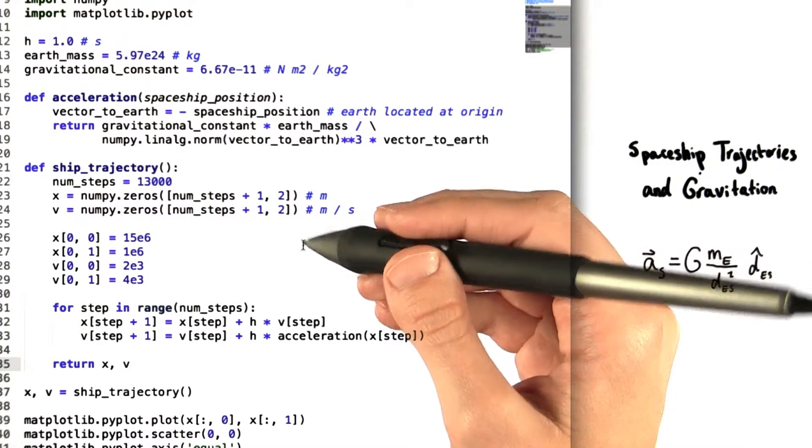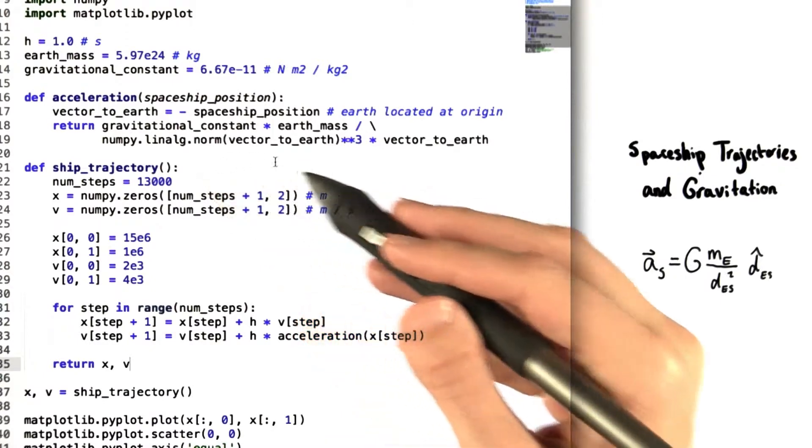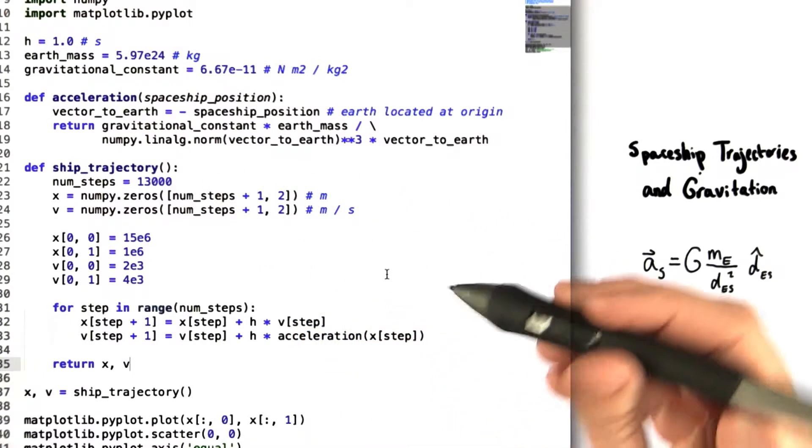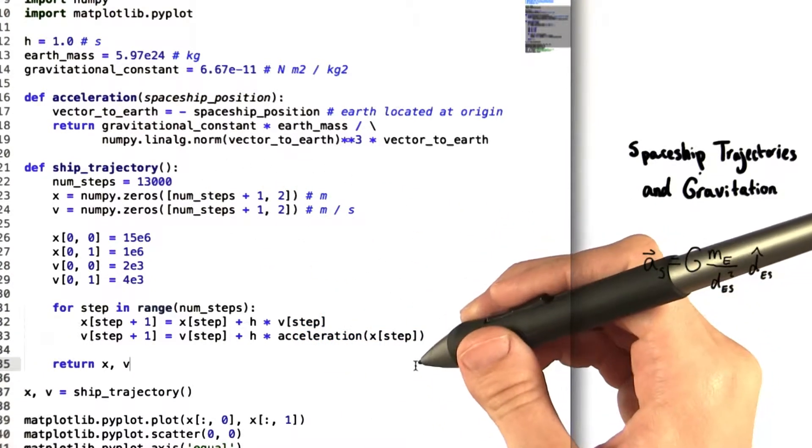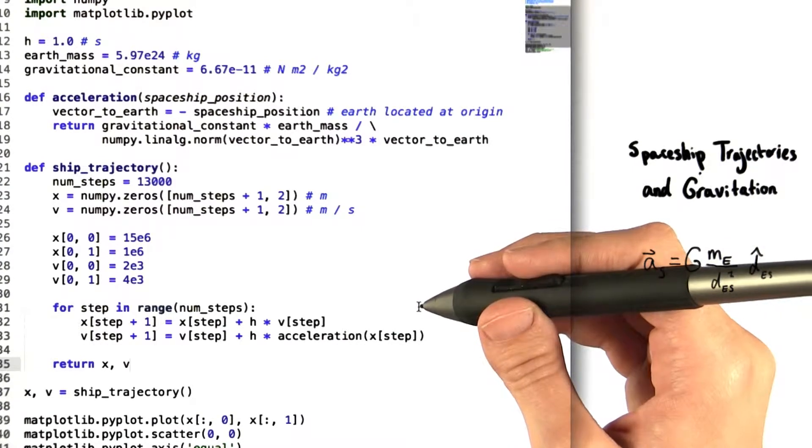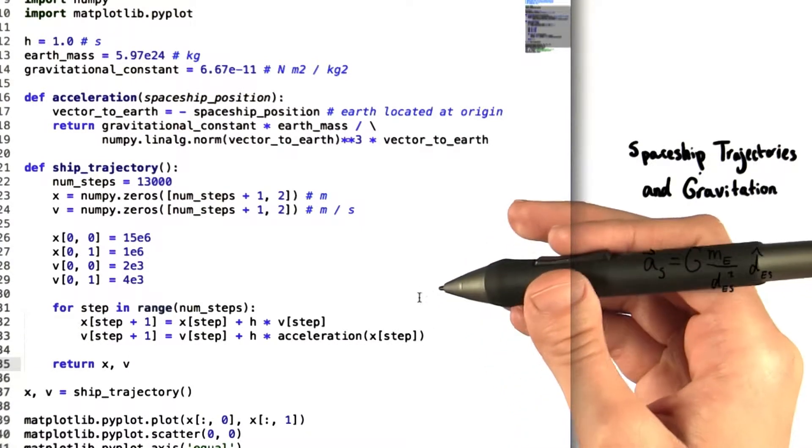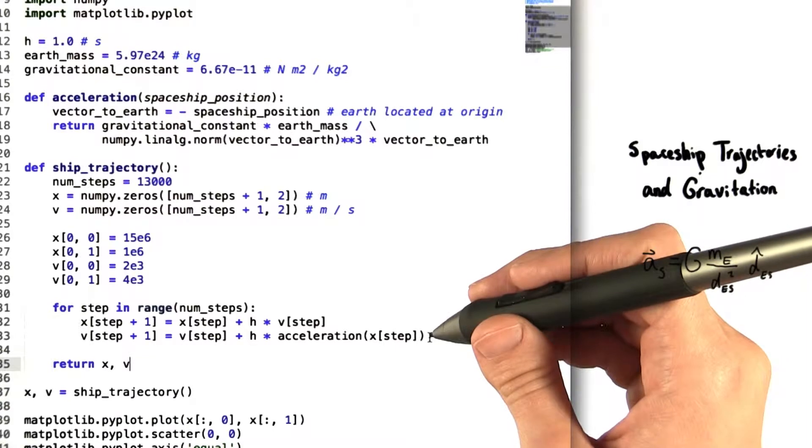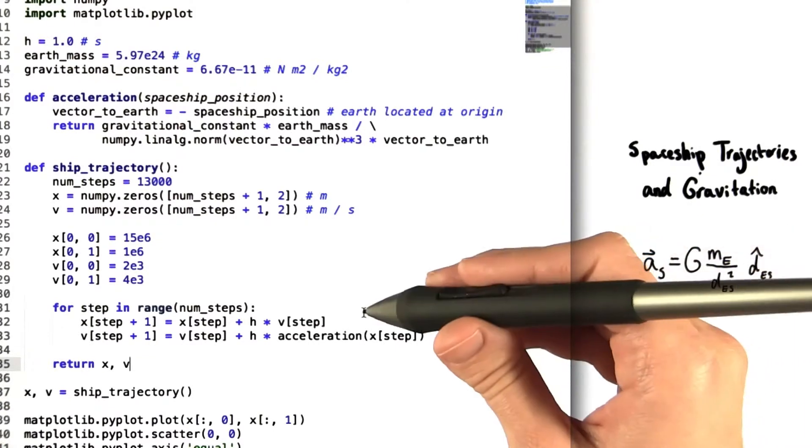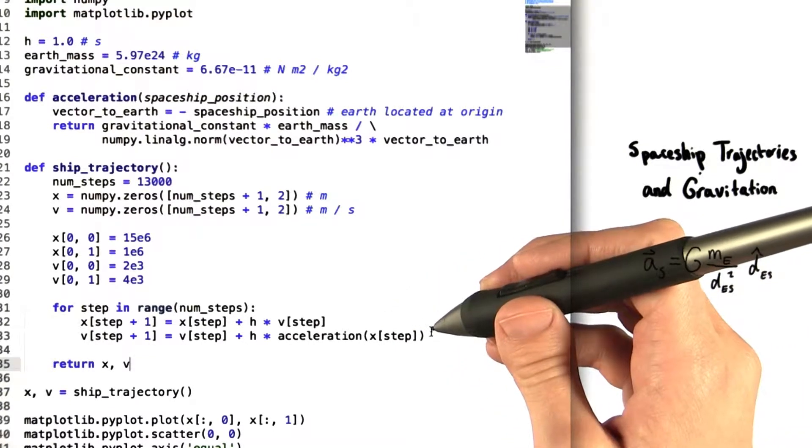Now we move on to the definition of the function ship trajectory. Since we gave you all of this code, we skip down here to this final for loop. This is something that we've seen several times before. These two lines implement the forward Euler method to show how position and velocity are going to change with each step.